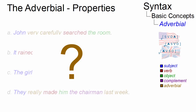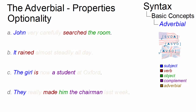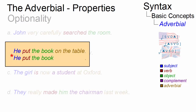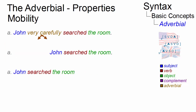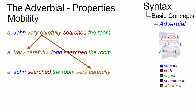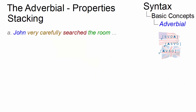But how can we identify adverbials? They are mostly optional, except some obligatory adverbials — for example, the obligatory place adverbial of put, as in: he put the book on the table. Furthermore, adverbials are generally mobile, with some constraints depending on the type and form of the adverbial, and adverbials can generally be stacked.